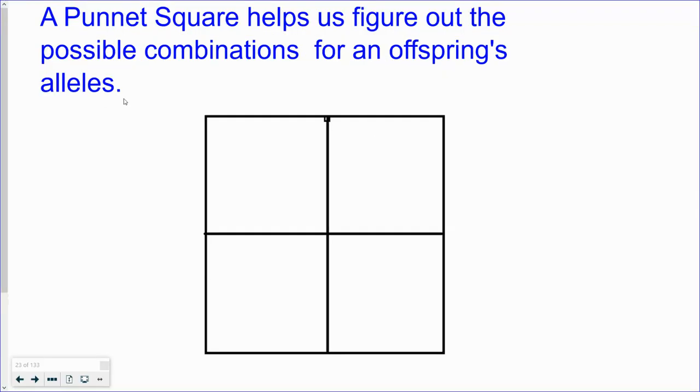A Punnett square is kind of like a multiplication table. It helps us understand the way in which alleles are passed on from one parent to the offspring.